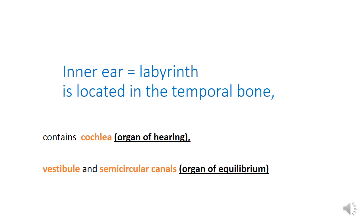The inner ear consists of the bony labyrinth filled by perilymph, enclosing the membranous labyrinth filled with endolymph. It is responsible for the perception of both sound and balance. The cochlear part consists of bony and membranous cochlea. The balance or vestibular part consists of bony and membranous parts — the bony part consisting of vestibule and three semicircular channels, and the membranous part consisting of utricle, saccule, and three semicircular ducts.